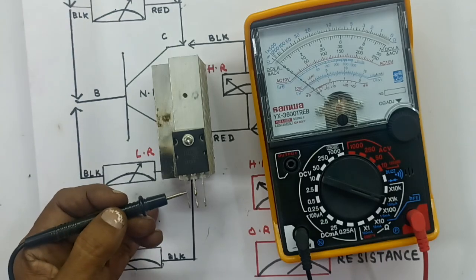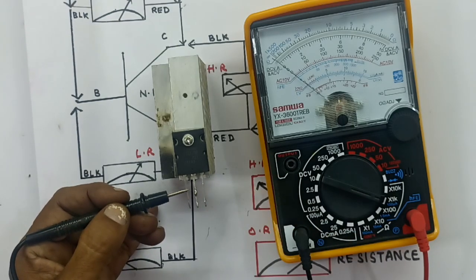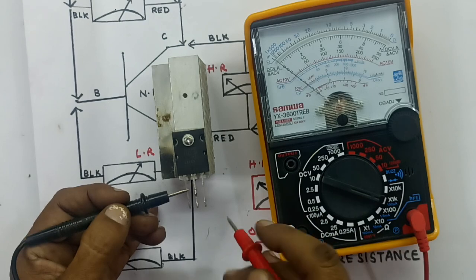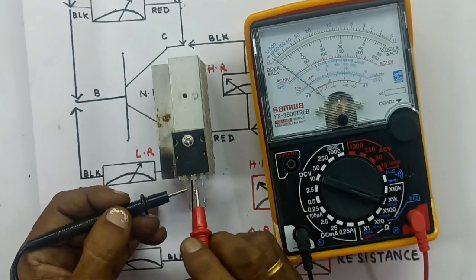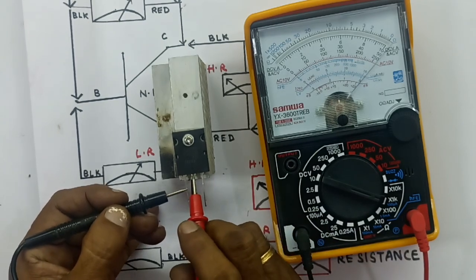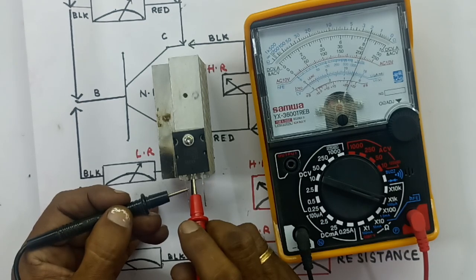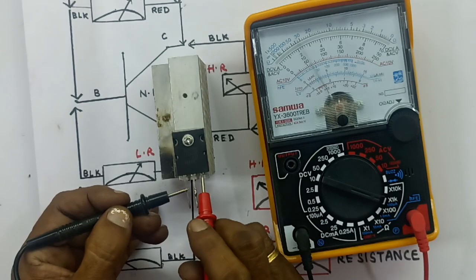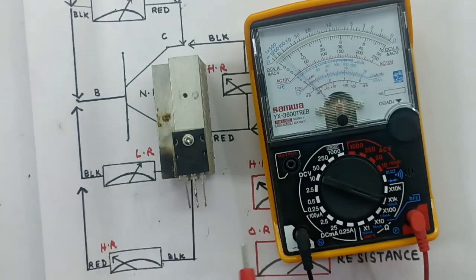I'm going to use the black test probe. I'm placing it at the collector-emitter. In the center, I'm at the collector-emitter. The reading shows a straight line — that indicates it is okay.